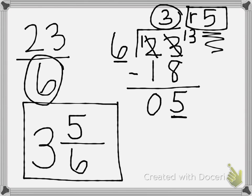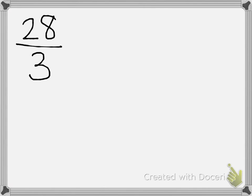I'm going to do this one last time to give you one final example, going step by step. The fraction greater than 1 is 28 thirds. We know this is a fraction greater than 1 because the numerator 28 is bigger than the denominator 3. Our first step is to divide the numerator by the denominator — how many times can 3 go into 28?